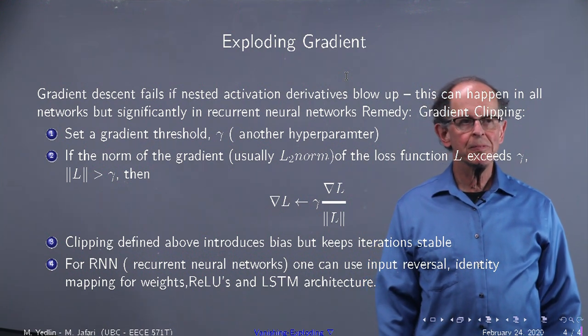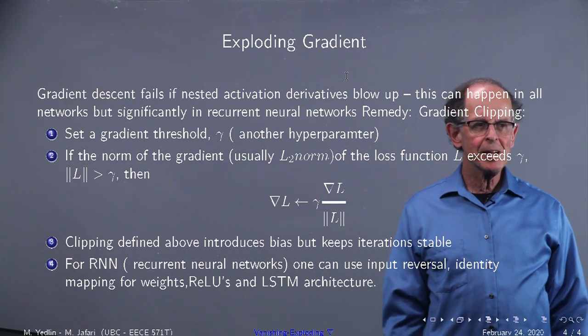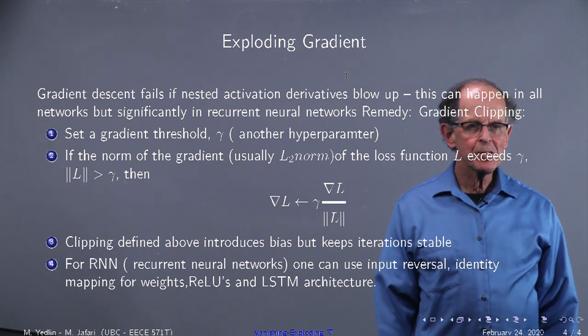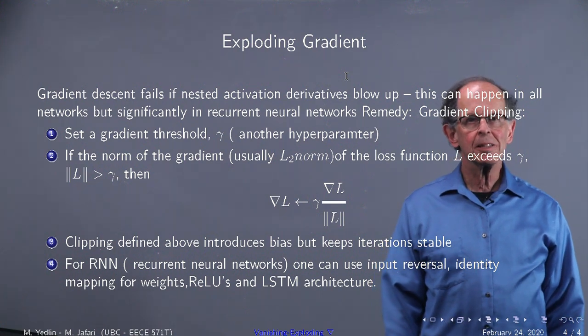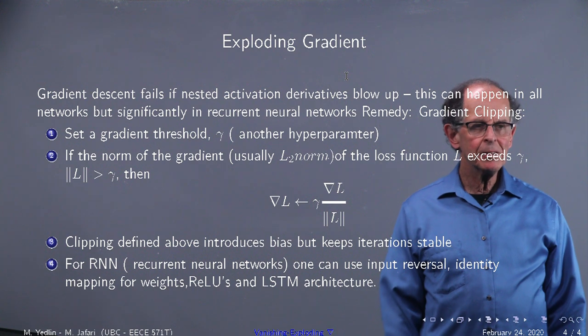Well, the question is, what happens if you can't compute things? We'll just put gradient of L over magnitude of L, which is a unit vector if it's L2 Euclidean length. So just multiply it by gamma and you know the direction.